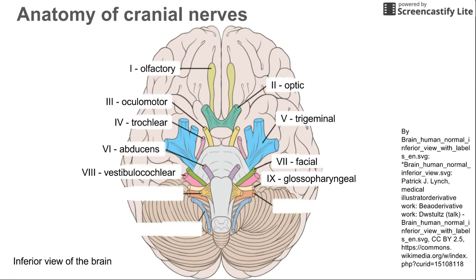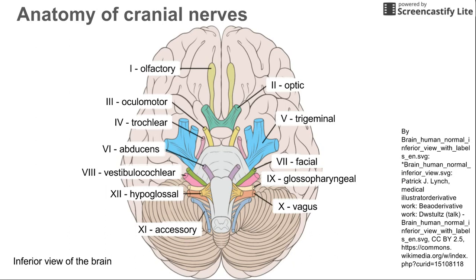Cranial nerve nine is the glossopharyngeal nerve, right below cranial nerve eight. Vagus is right below that — cranial nerve ten. Cranial nerve 11 is interesting because some parts of it technically come from lower down on the spinal cord, so it's kind of like a cervical nerve, but it's been labeled as a cranial nerve and that label has stuck. It innervates muscles in your neck and your trapezius — it's the oddball that appears out of order. Lastly, cranial nerve 12 is the hypoglossal nerve, which innervates the tongue and overlays some of the other cranial nerves as you can see in this image.